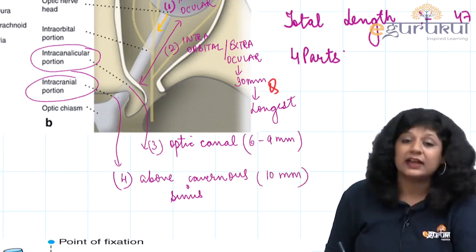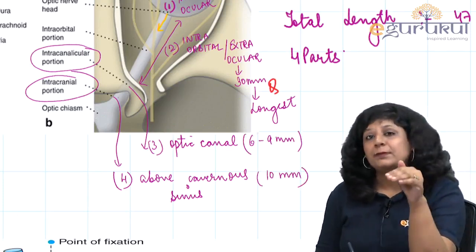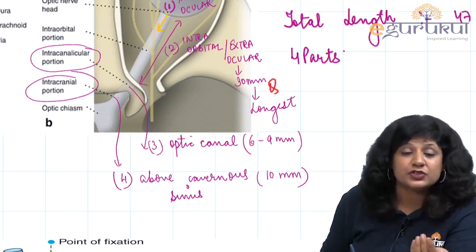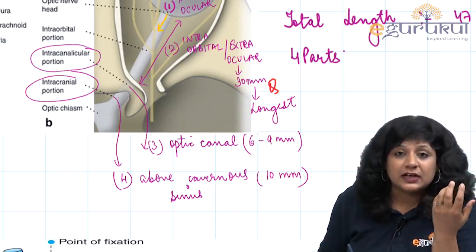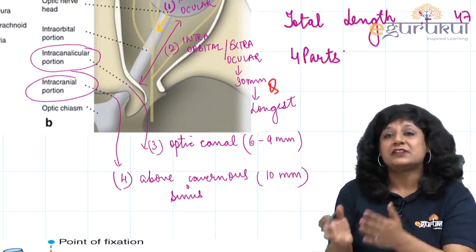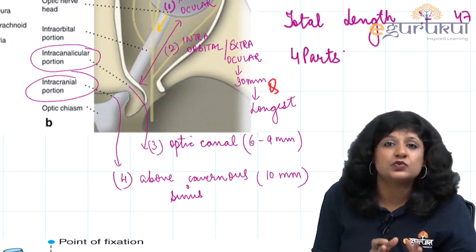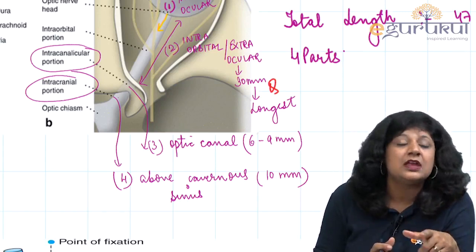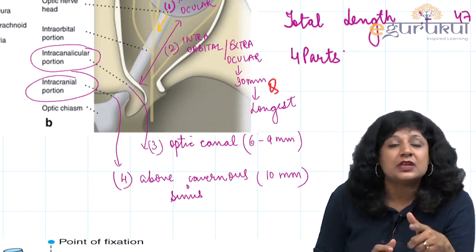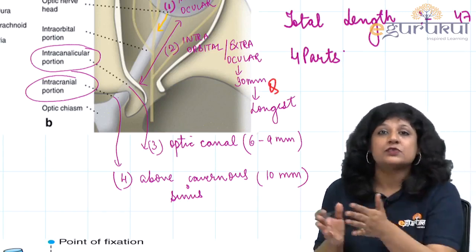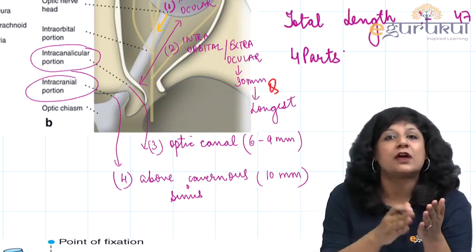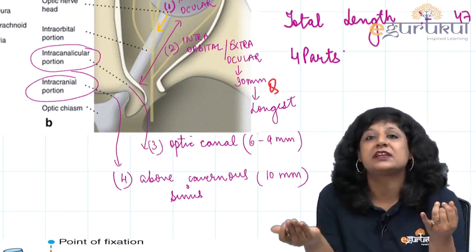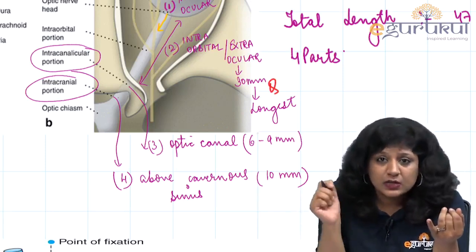An important point is that the optic nerve does not pass through the cavernous sinus. That is why when we read about superior orbital fissure syndrome, carotid-cavernous fistulas, and cavernous sinus thrombosis, the visual acuity is not affected in early cases. Many questions share the same signs and symptoms — the key differentiator is whether visual acuity is drastically affected in the initial phases.